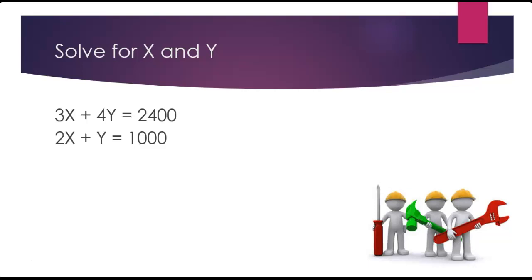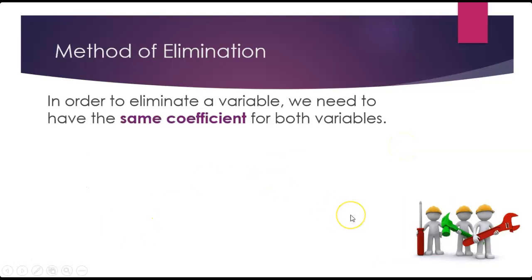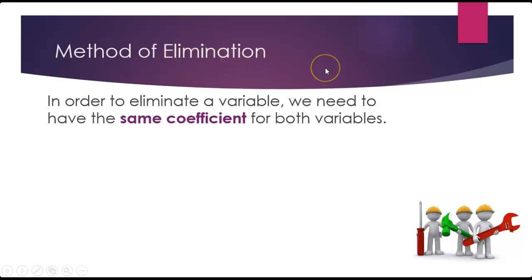We're going to practice with this one: 3x plus 4y equals 2400, and 2x plus y equals 1000. The first step is that we'll label our equations — equation one and equation two — for easy reference. Next, we'll be looking at the method of elimination as a means of solving. There's also the method of substitution, but we'll touch on that a little later.